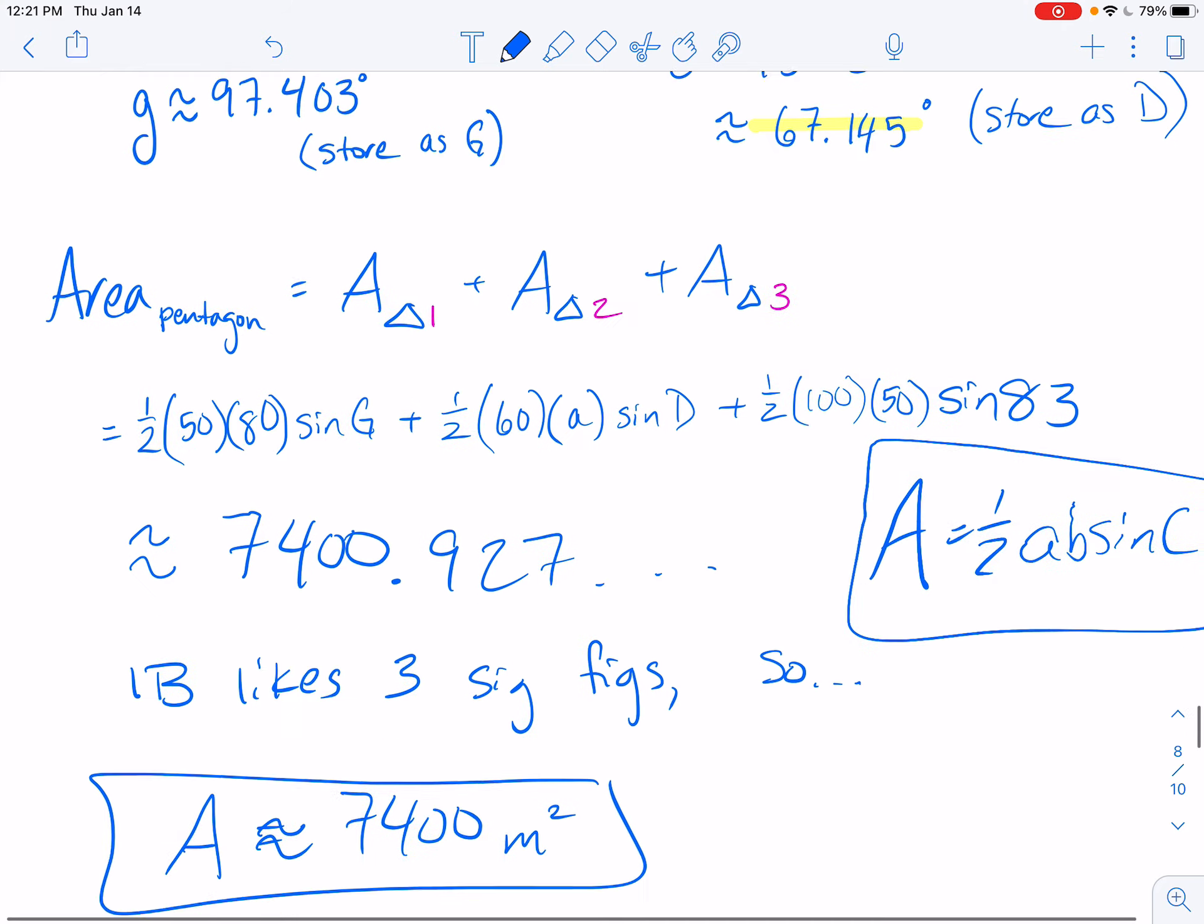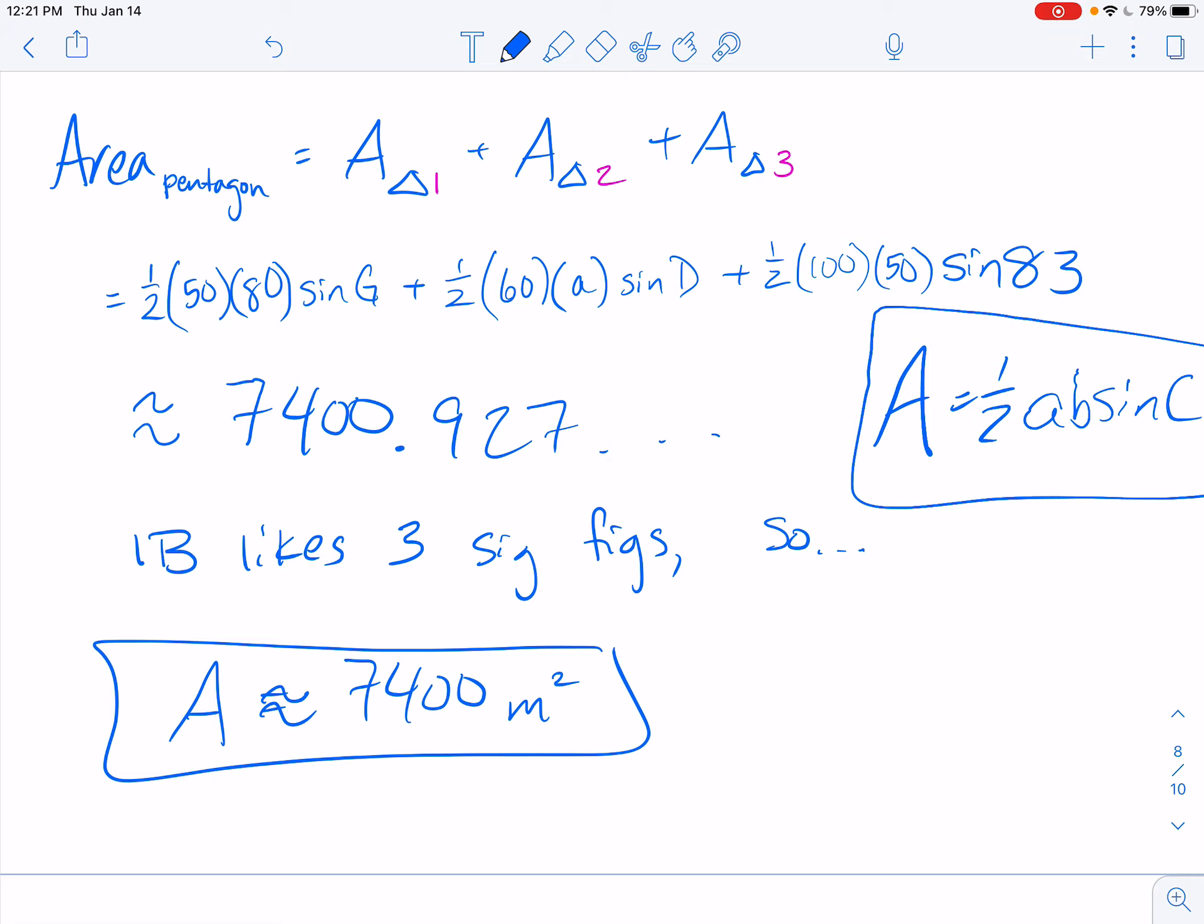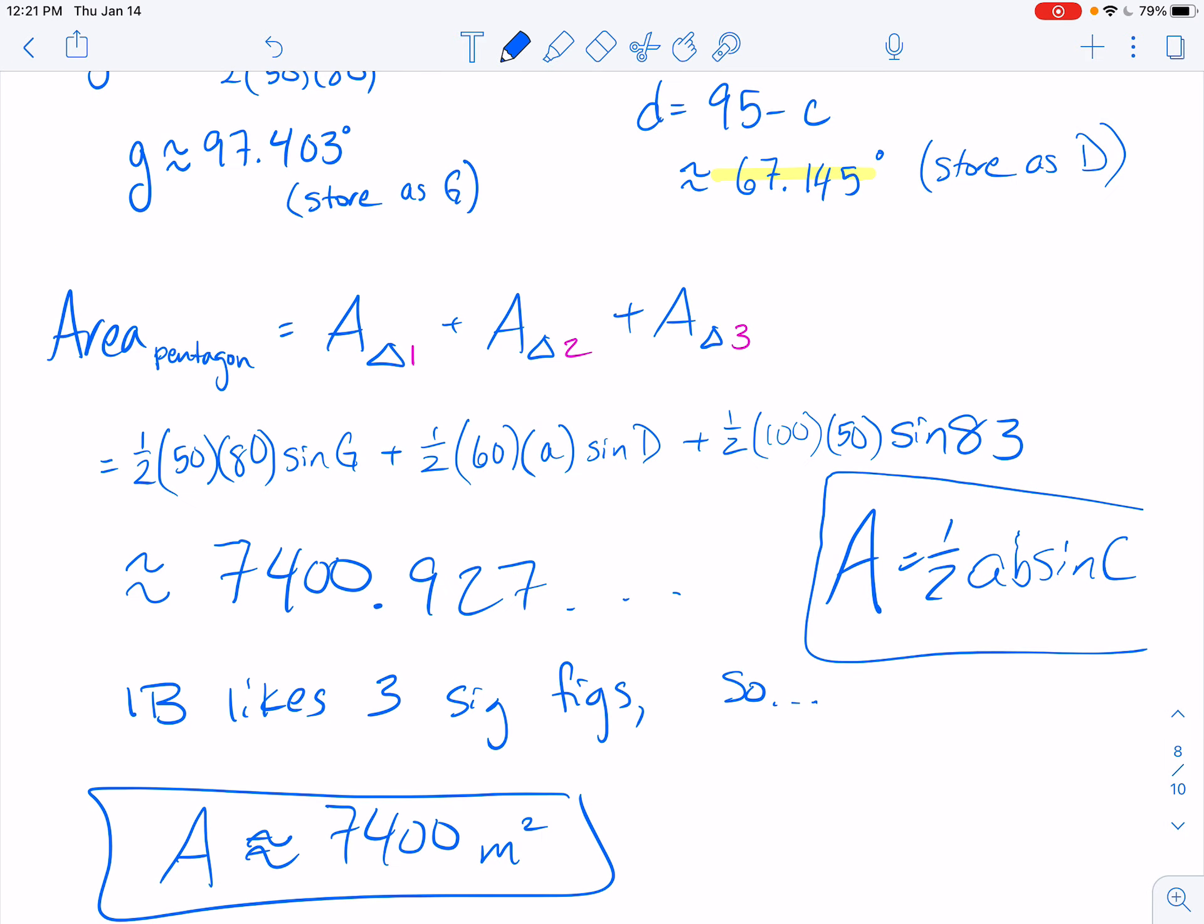And IB does like three sig figs, so this value here rounded to 7,400 square meters. So hopefully that made sense. Let me know if you have any problems.